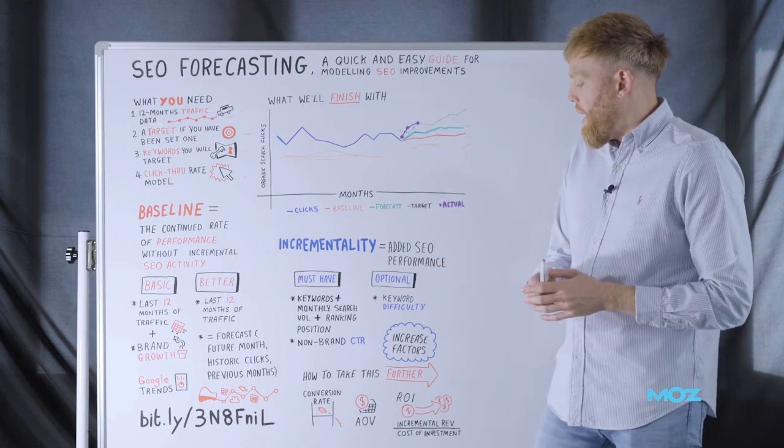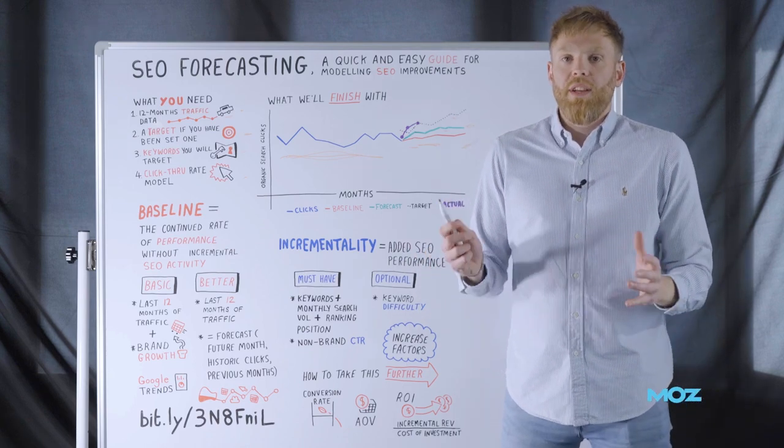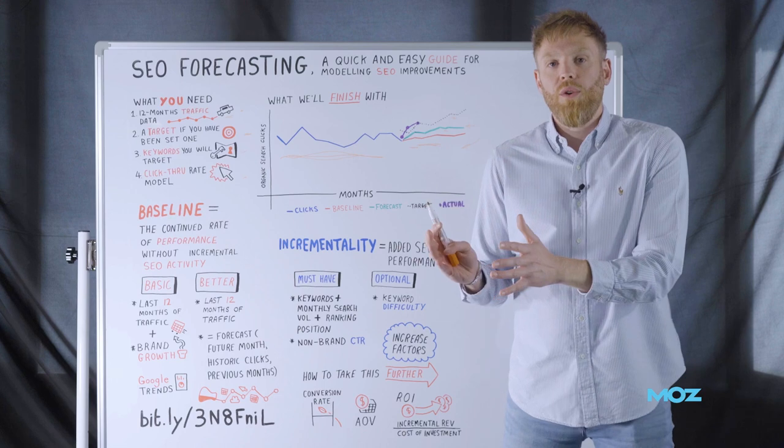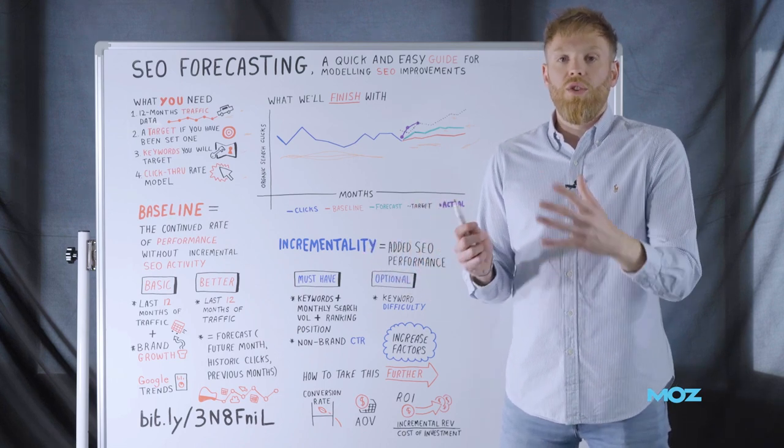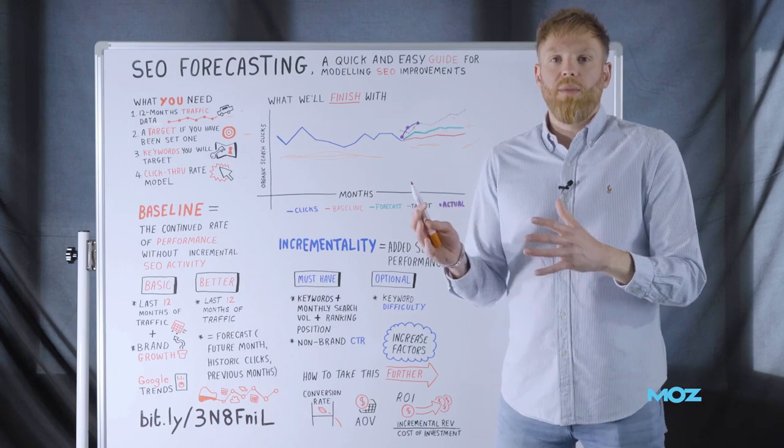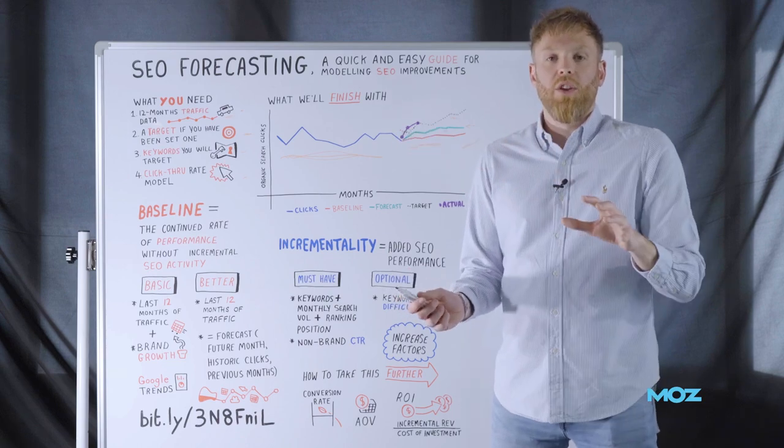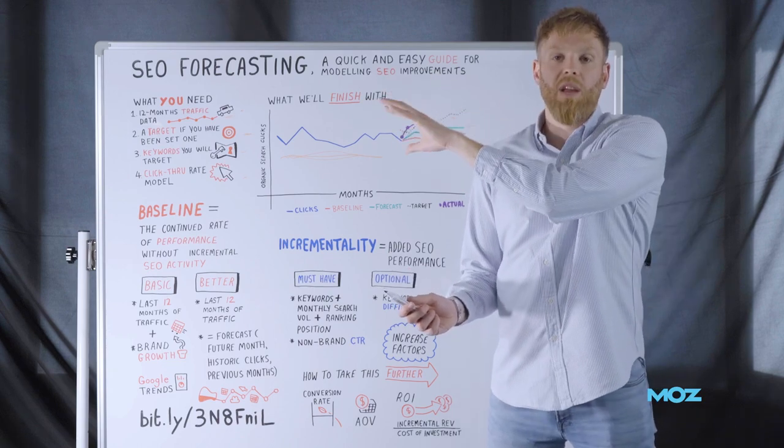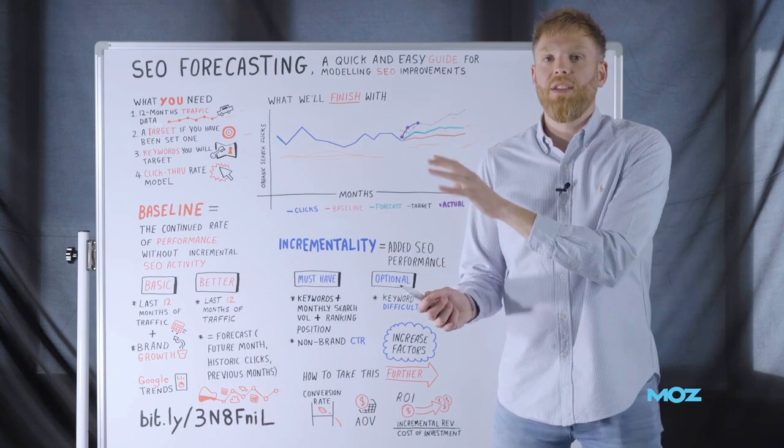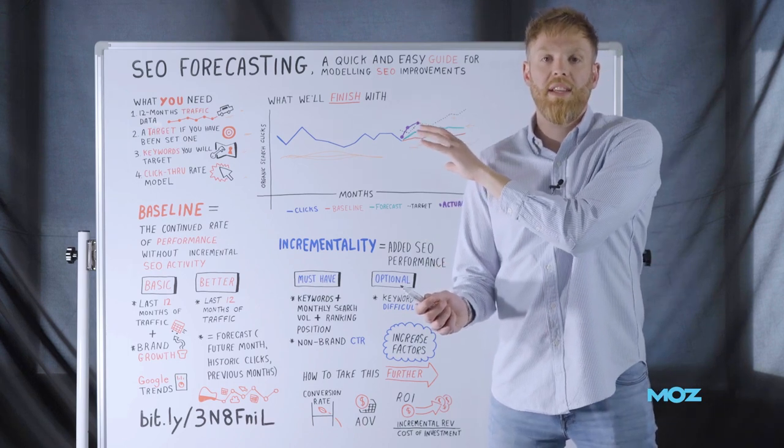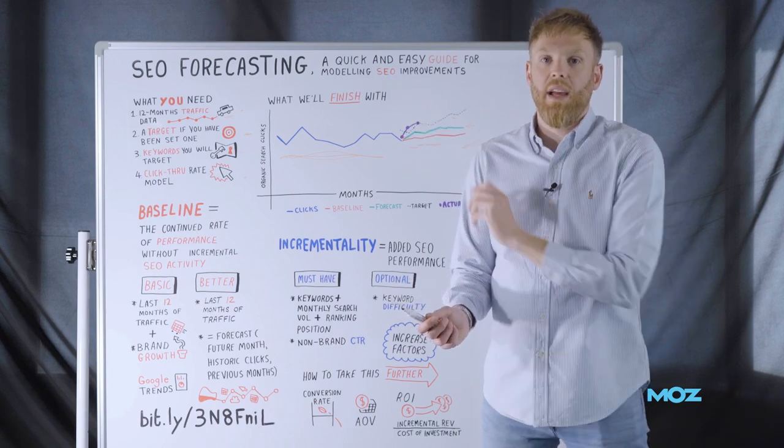An optional metric that we can put in is keyword difficulty. Now that's useful because if you can understand how difficult it is to target or drive improvements from each of those keywords, you know the rate of change that you need to put forward with regards to your increase factors. How quickly are we going to drive incremental ranking performance? If it's super competitive, it's probably going to take us longer. If there's minimal competition, we'll be able to drive that incrementality a lot quicker.